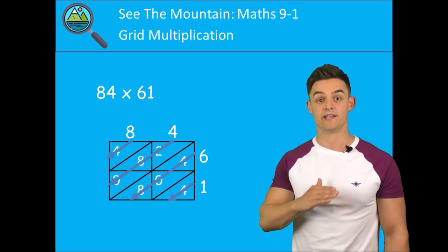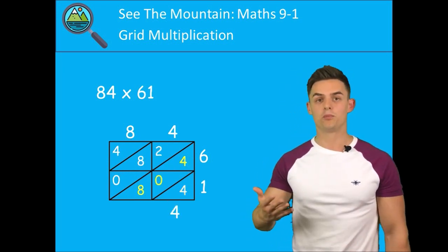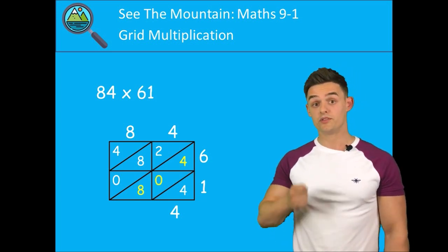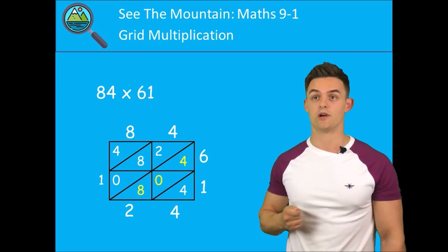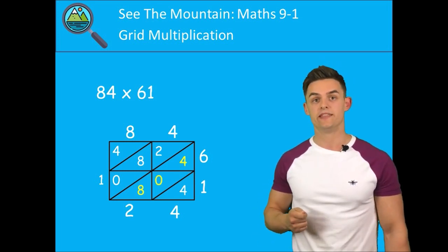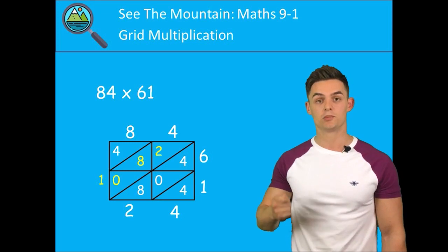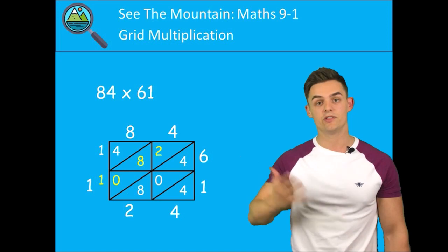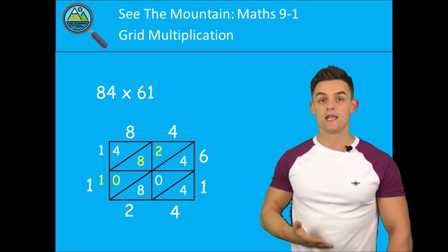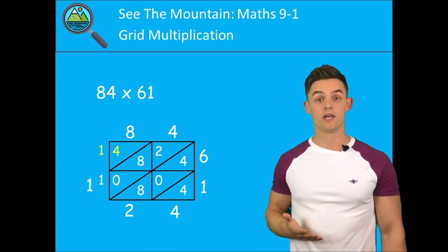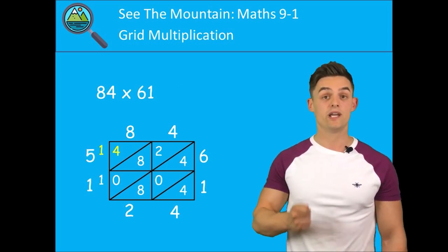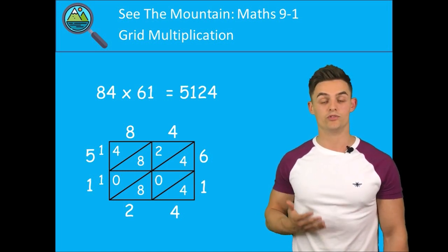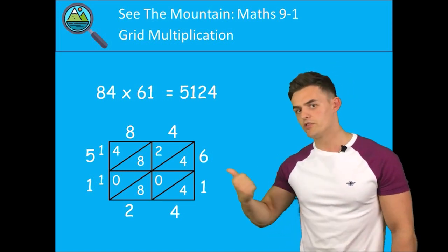Once again we add the numbers from right to left down the diagonals. 4 is 4. 4 plus 0 plus 8 is actually 12 - that's a two-digit number. We put the 2 where we would usually put our answer and carry the 1 to the next diagonal. Now we have 2 plus 8 plus 0 plus 1, that gives us 11. We include the 1 and carry the 1 to the next diagonal. In this final diagonal we have 4 plus 1, and that gives us 5. So 84 multiplied by 61 equals 5124.